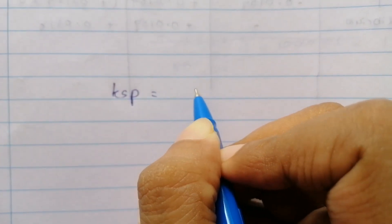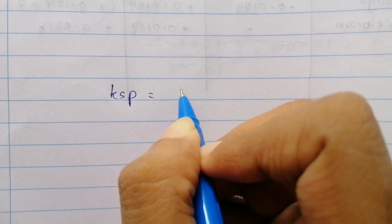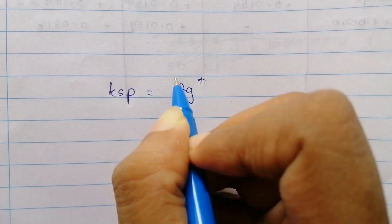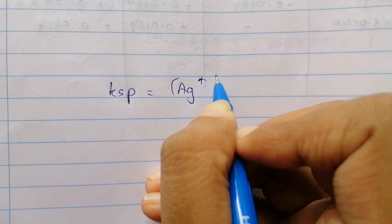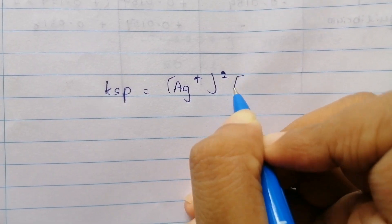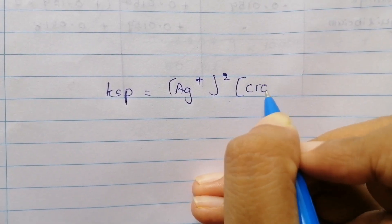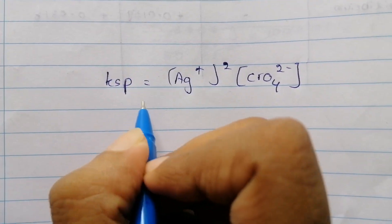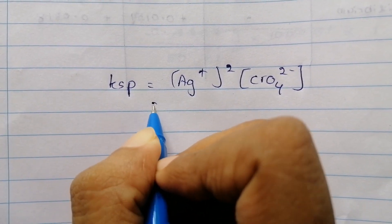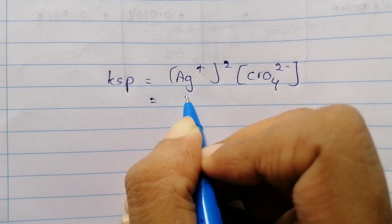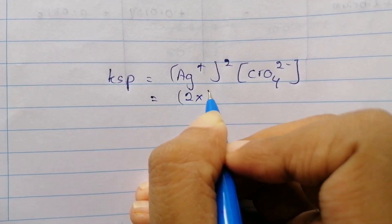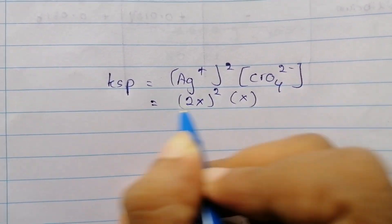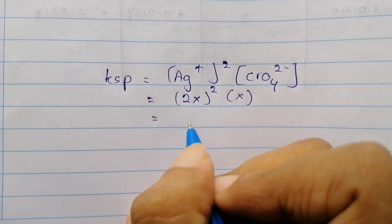The silver concentration is 2x and the chromate concentration is x. Solving for x gives the solubility of silver chromate.